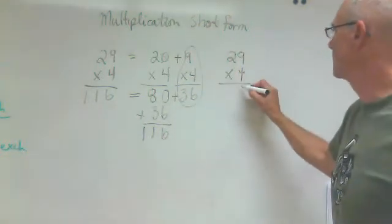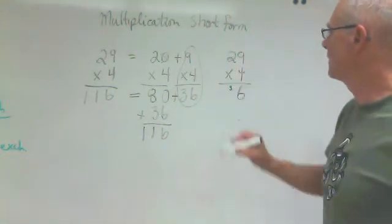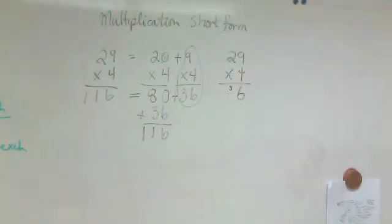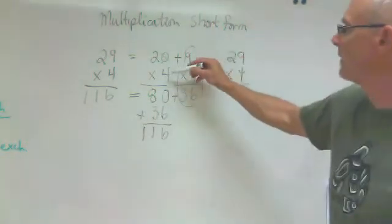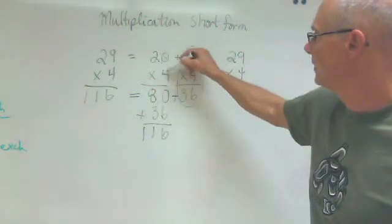4 times 9 is 36. So we put our 6 here and we can put a little 3 there. 36. Next we're going to multiply 4 times our 2 position. 4 times 2.